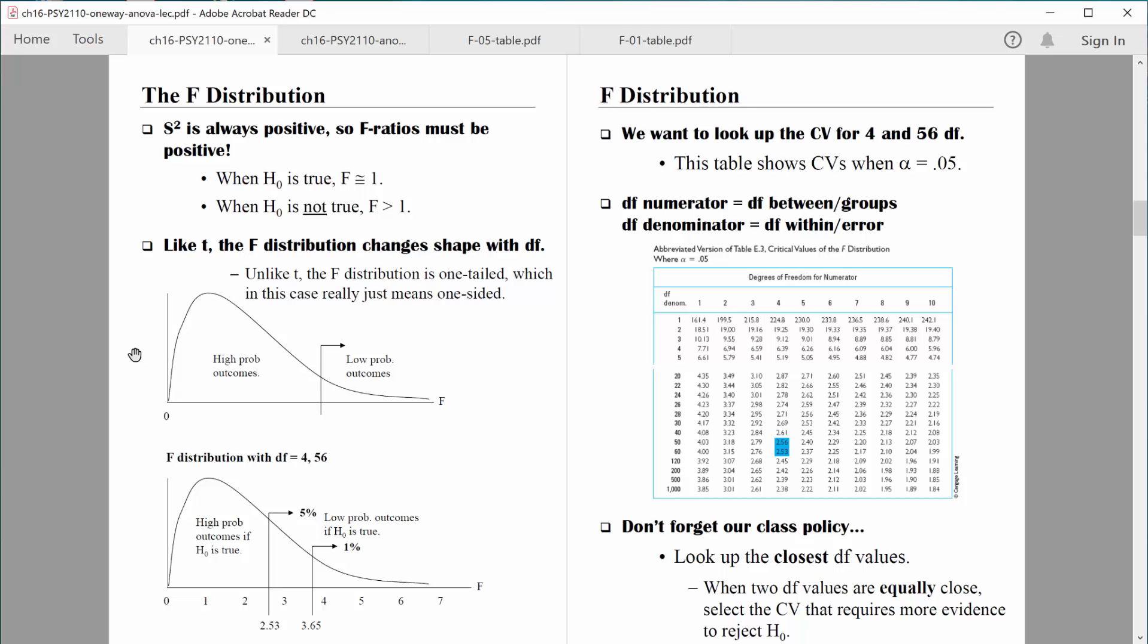Another thing you'll notice about this F distribution is that it's one-sided. You can say it's one-tailed, but it really makes more sense to think about it as one-sided. The reason why it's one-sided is because like I said before, variance can only be positive. So the F ratio will always be positive. So really we only have numbers on the positive end of the number line. And what we want to do right now is figure out where's the most extreme 5% cutoff, or for example, where's the most extreme 1% cutoff, because that would give us the critical value for an alpha of 0.05 or for an alpha of 0.01. And those alphas, as we've learned, are the alpha levels that we encounter most often.